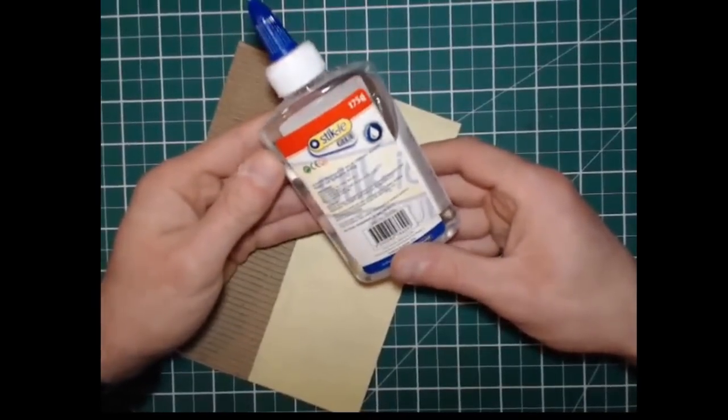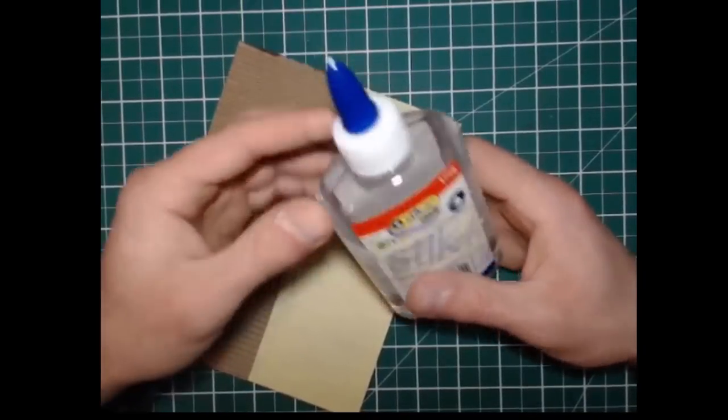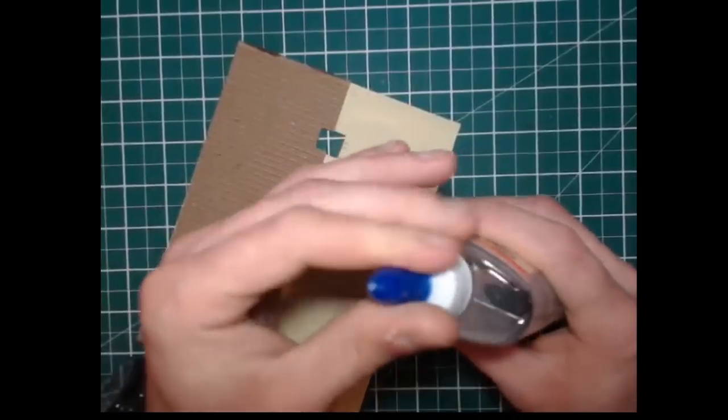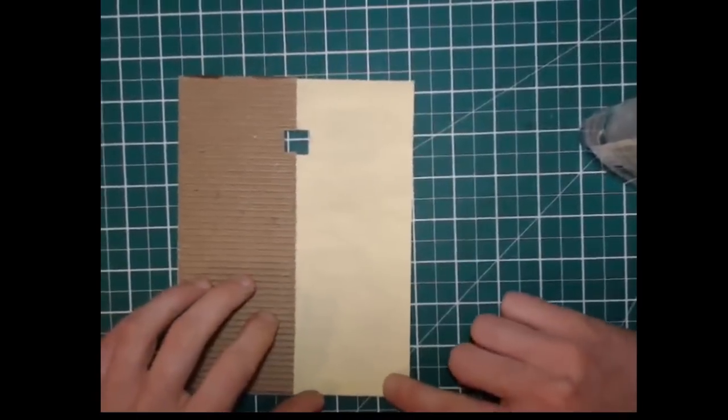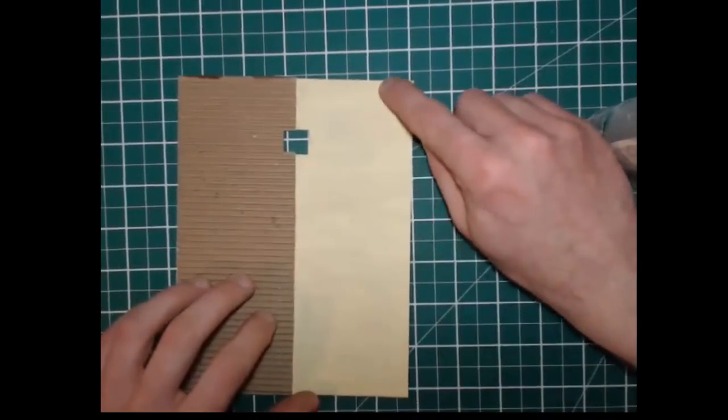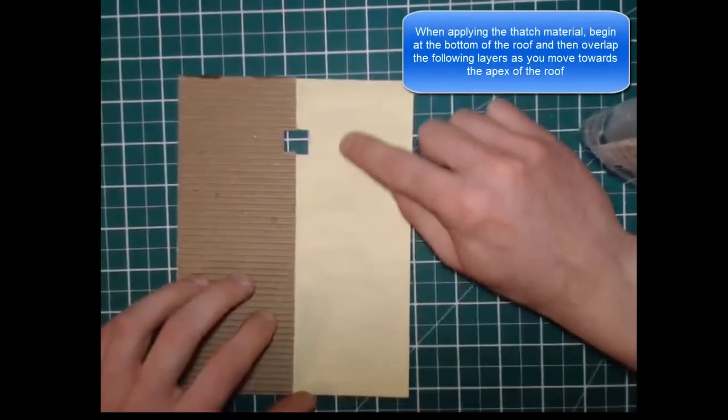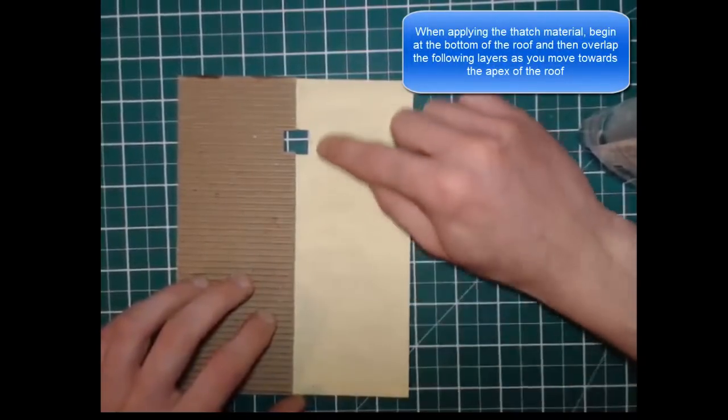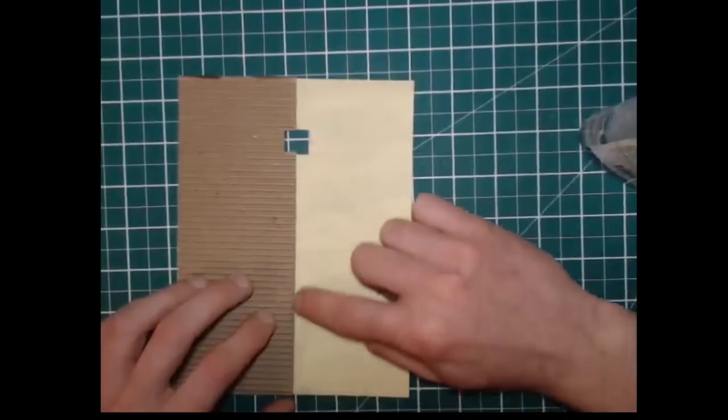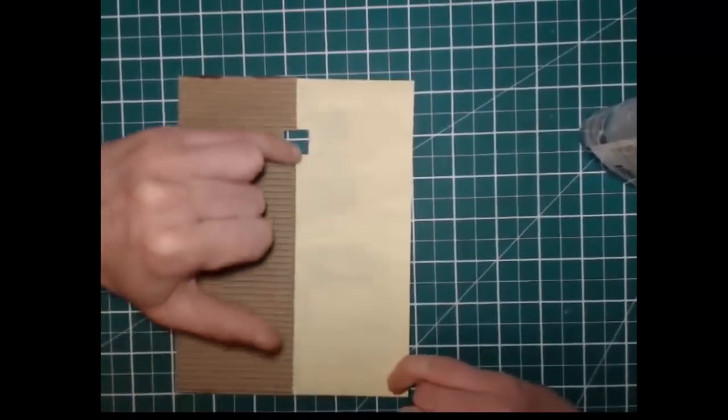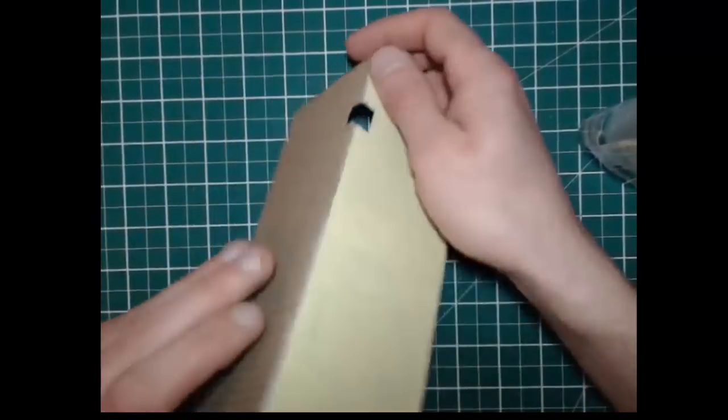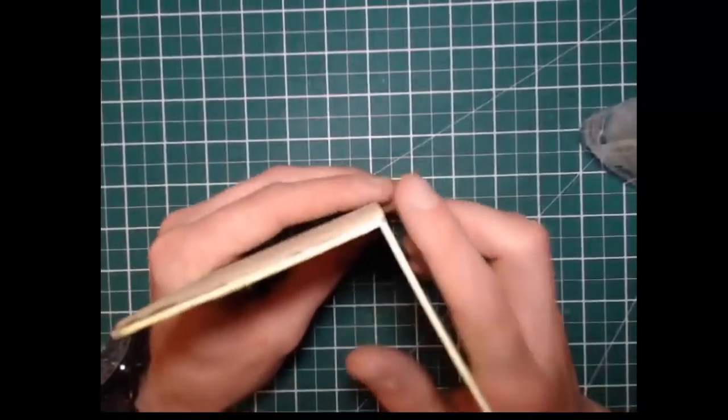We just use our normal clear glue and we will try and work it in sections at a time. So we are going to attach right the way across on the first layer on the bottom, then we are going to apply another layer on top of that and then we are going to apply a third layer and sometimes you will just apply a fourth layer which will run right up along the apex of the roof. The apex of the roof being here.